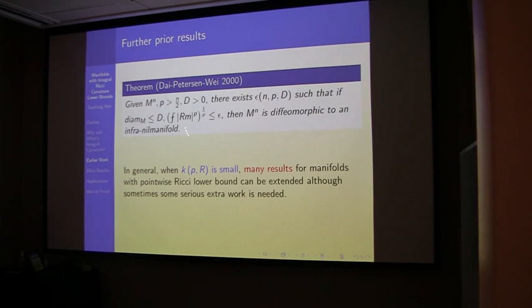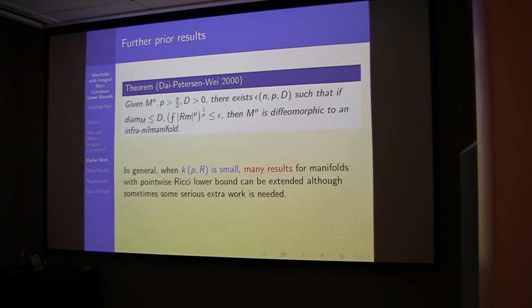The general philosophy is: if the normalized integral curvature is small, then many results can be extended from pointwise to integral curvature, but it's not obvious. Sometimes from analysis p bigger than n over 2 is automatic, but there are still many things that cannot be extended. For example, the classical Bonnet-Myers theorem can be extended to integral curvature, but Synge's theorem for sectional curvature does not have an integral version — so it's not as automatic as you'd think.